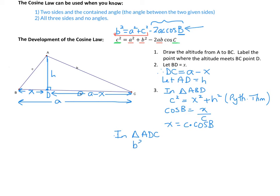B squared — the hypotenuse squared — equals H squared plus (A minus X) all squared. Now we apply our algebra skills and square that binomial using the shortcut: square the first, double the product, and square the last.